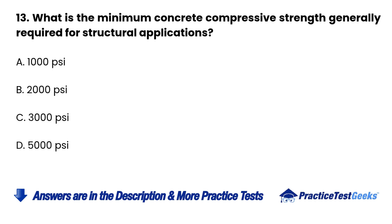Question 13. What is the minimum concrete compressive strength generally required for structural applications? A. 1000 psi. B. 2000 psi. C. 3000 psi. D. 5000 psi.